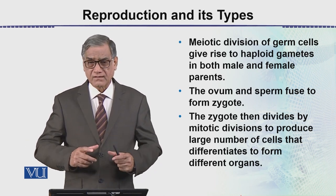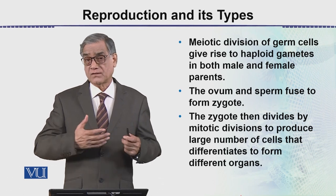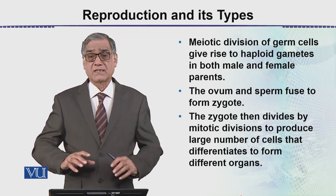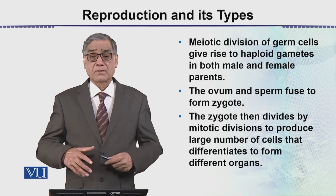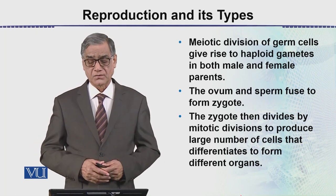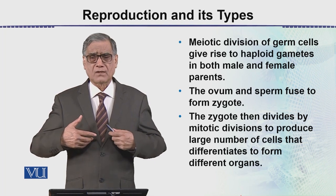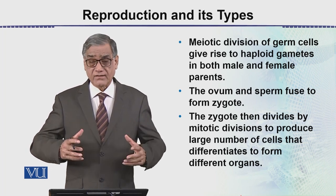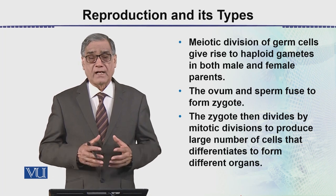The zygote divides repeatedly through developmental stages to become an adult individual. The adult individual has reproductive organs containing germ cells, which undergo meiosis to produce sperms and eggs. These unite together again to form a new individual. This cycle is what we call sexual reproduction, and it is a very important characteristic for the continuation of the species.